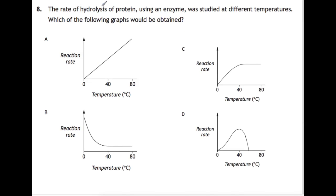Question 8. The rate of hydrolysis of a protein using an enzyme was studied at different temperatures. Which of the following graphs would be obtained? Enzymes have an optimum temperature that they work best at. Under that optimum temperature they'll still work but they'll be quite slow. And above that optimum temperature they will be denatured and won't work at all. So the graph that fits that is D where we have this slow reaction rate. We peak here and then we fall off really quickly.